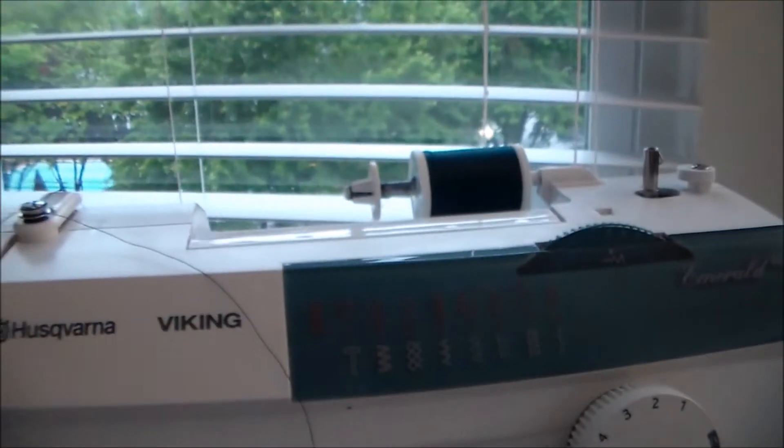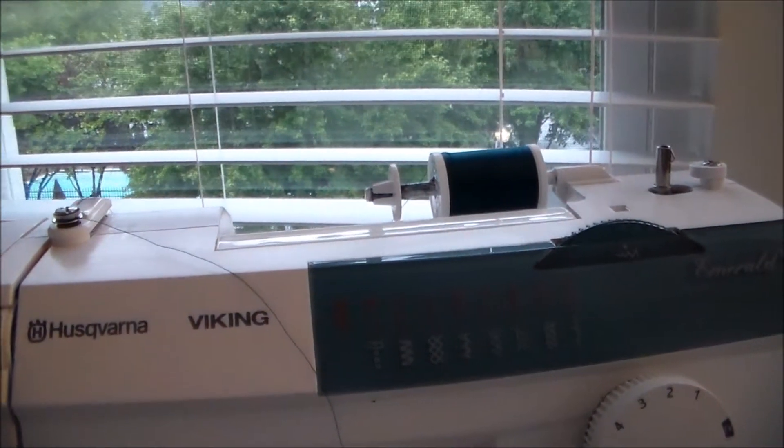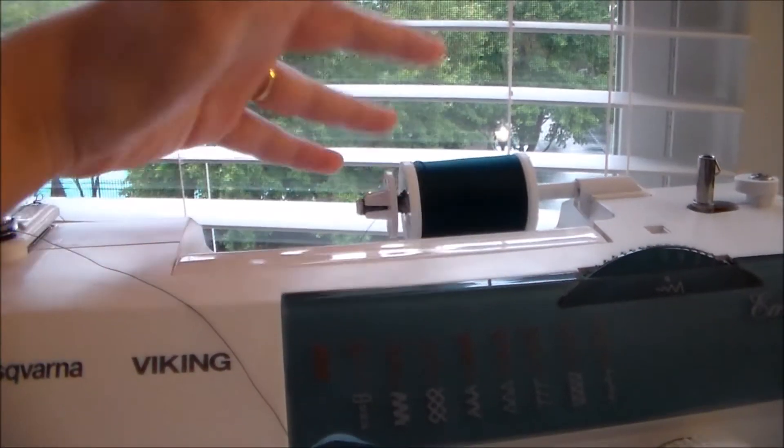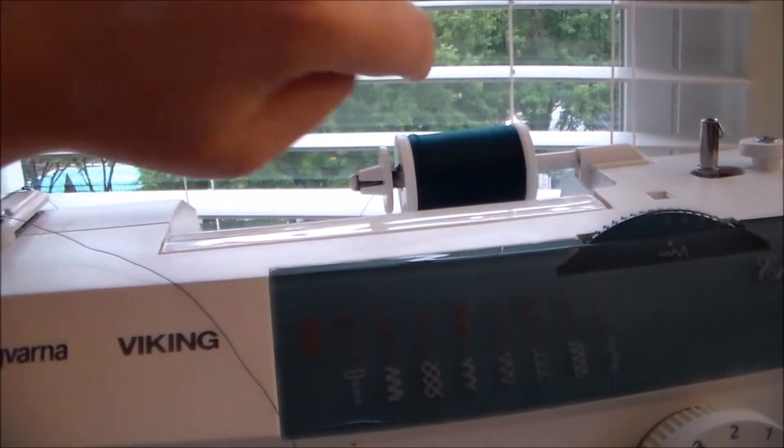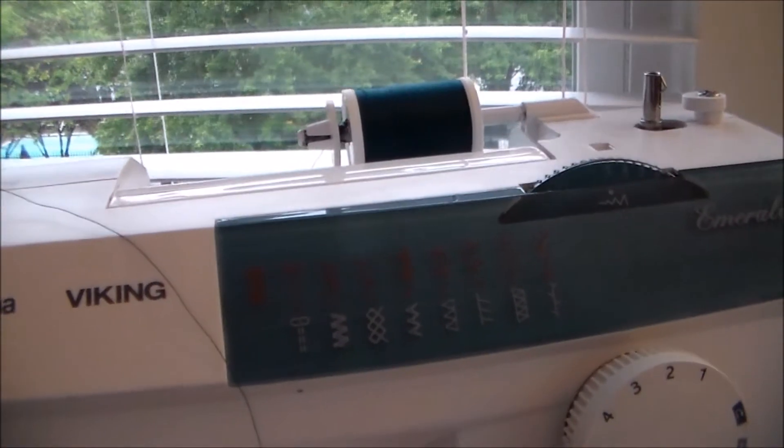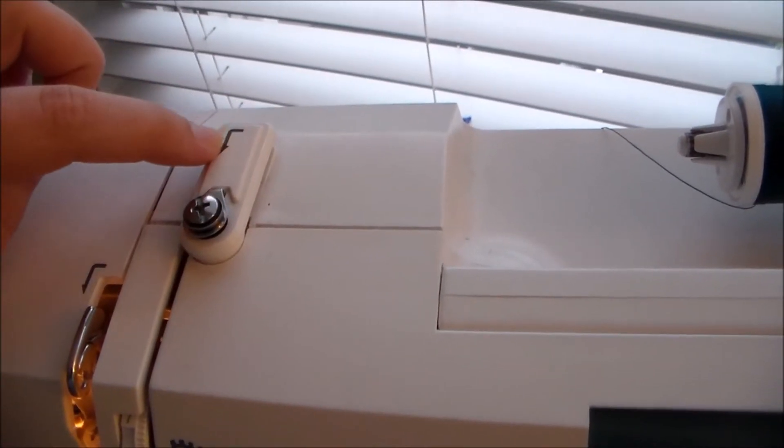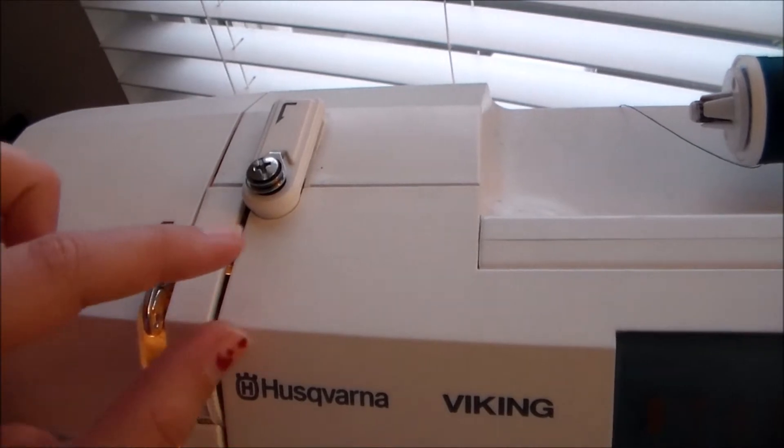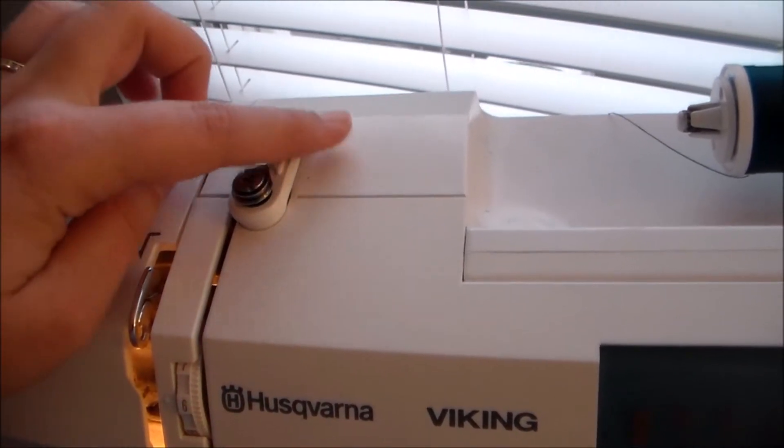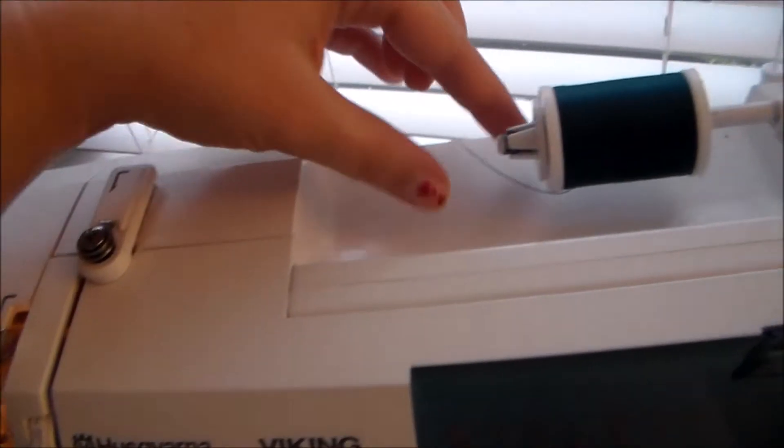Now we're going to go up and take the thread from earlier and remember if there's any notch or anything in it you want the notch going that direction so the thread doesn't get caught. Most modern sewing machines have some sort of arrow either printed on or a plastic raised bit to show guidelines of where to take the thread.